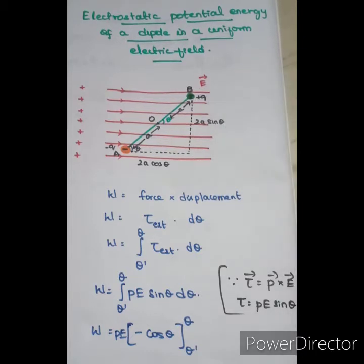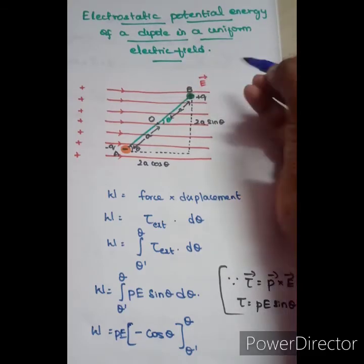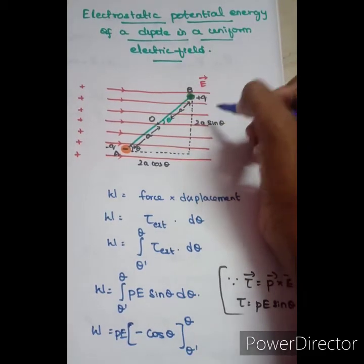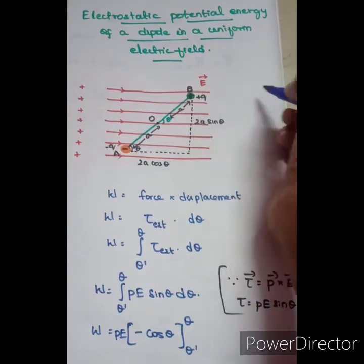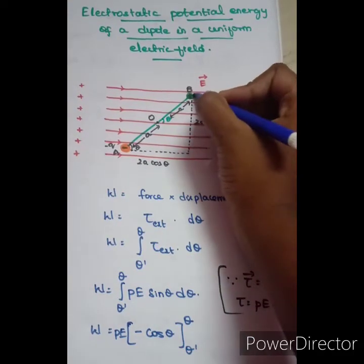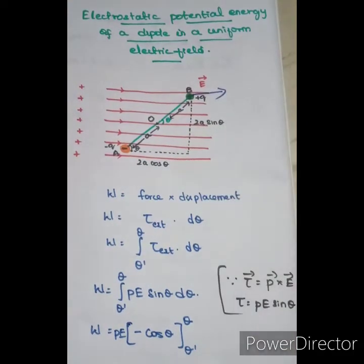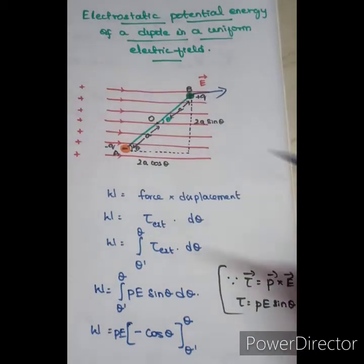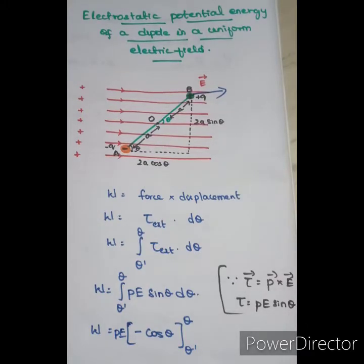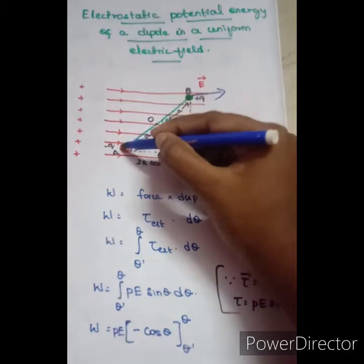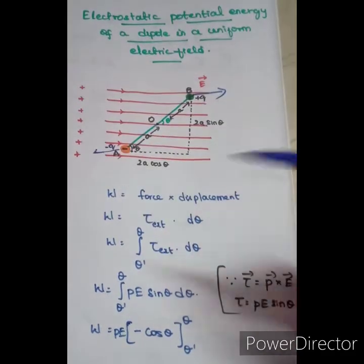Consider the positive charge of the dipole in the electric field lines — both are positive, so there is a repulsion force. For the negative charge, the electric field lines are positive and the charge is negative, so there is attraction. That's why there is a force in one direction for positive charge and the opposite direction for negative charge.